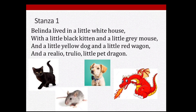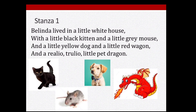Belinda lived in a little white house with a little black kitten and a little grey mouse and a little yellow dog and a little red wagon and a real, true, little pet dragon. Belinda is the first main character — a little girl who lives in a white house. She lives there with four pet animals: a little black kitten, a little grey mouse, a little yellow dog, and a little pet dragon. She also has a little red wagon in which she would ride around with all her pets.